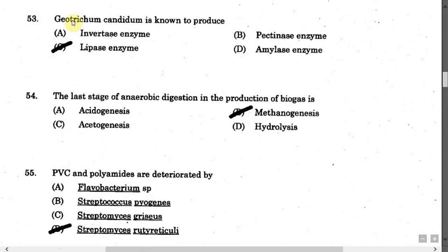The next question is: Geotrichum candidum is known to produce — Option A: Invertase enzyme. Option B: Pectinase enzyme. Option C: Lipase enzyme. Option D: Amylase enzyme. The correct answer is Option C, that is Lipase enzyme.